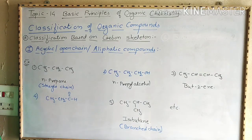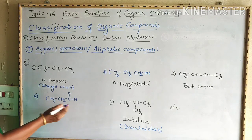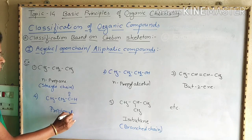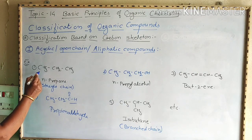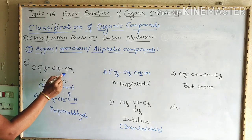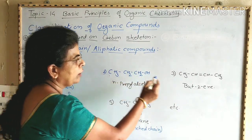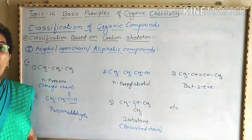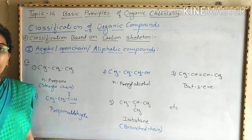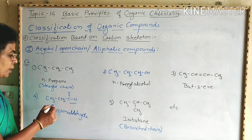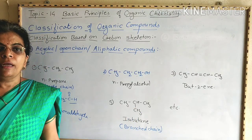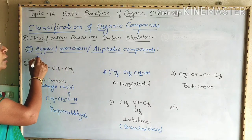Another example is CH3-CH2-CHO, which has three carbon atoms with an aldehyde functional group. Therefore the name of this compound is propionaldehyde. Now, in open chain compounds, all terminal carbon atoms are open — that is, they are not linked to each other. All terminal carbon atoms are free, and therefore they are open chain or acyclic, or aliphatic compounds.